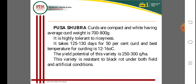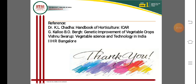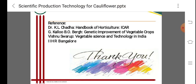The best temperature for curd formation is 12 to 16 degrees centigrade, and yield potential is 250 to 300 quintals per hectare. This variety is also resistant to black root disease. Thank you very much. Any queries or questions, please go to the comment box and refer to the recommended books for further details.